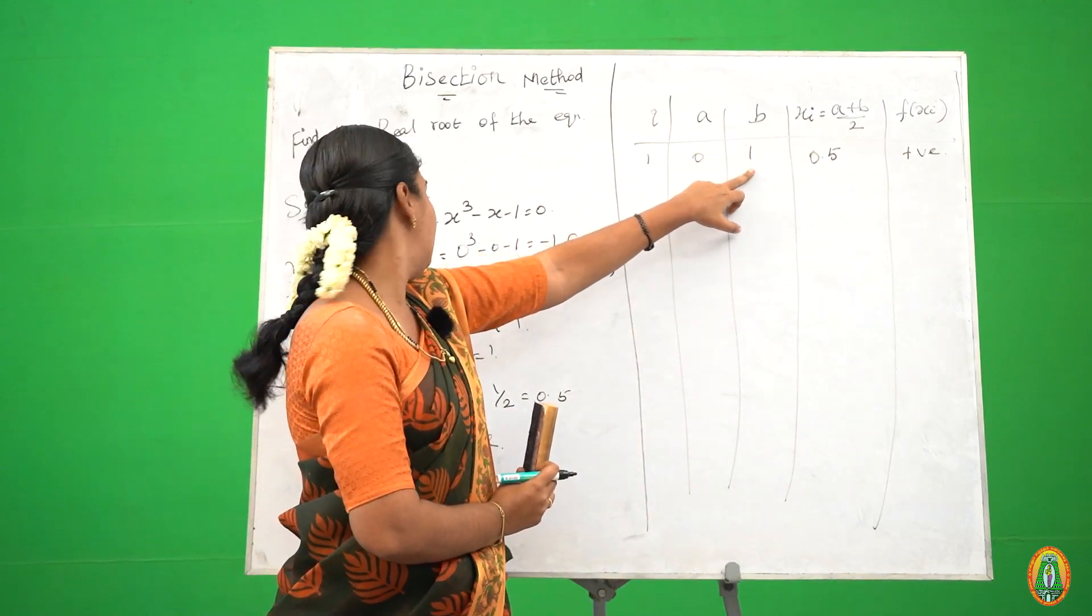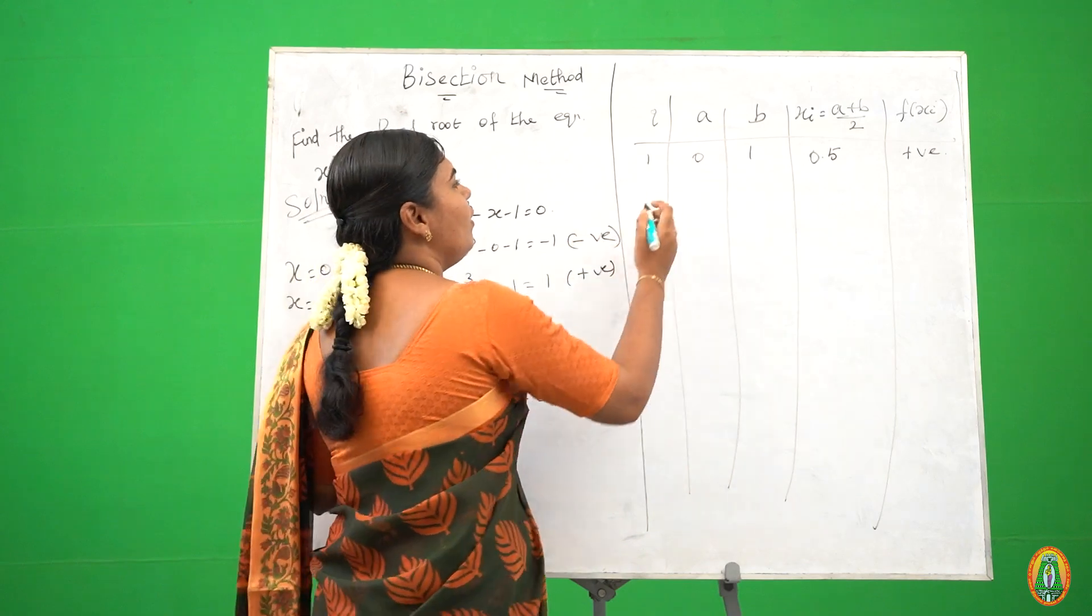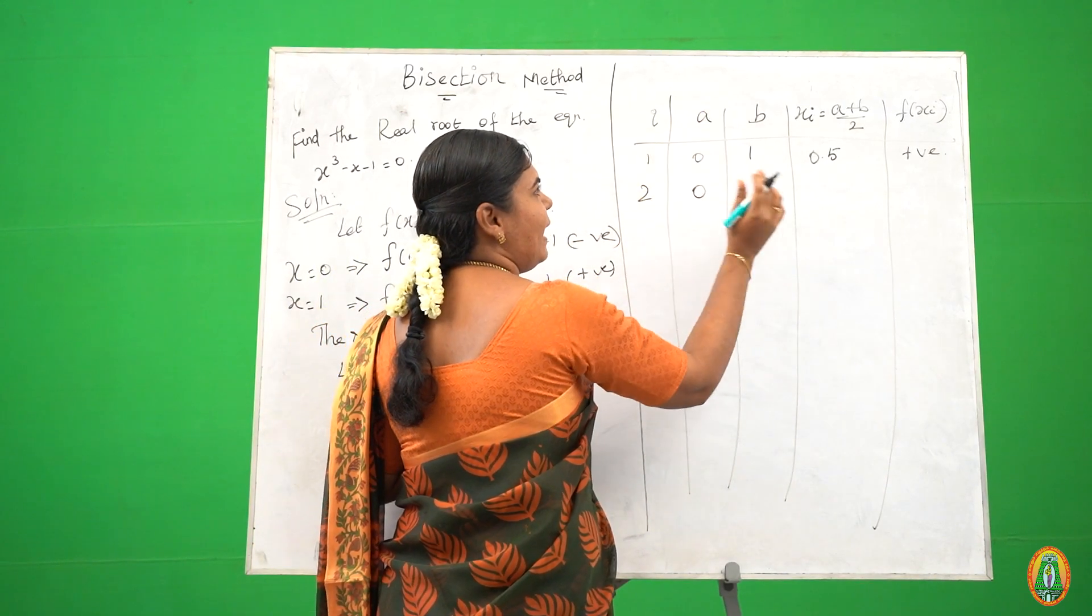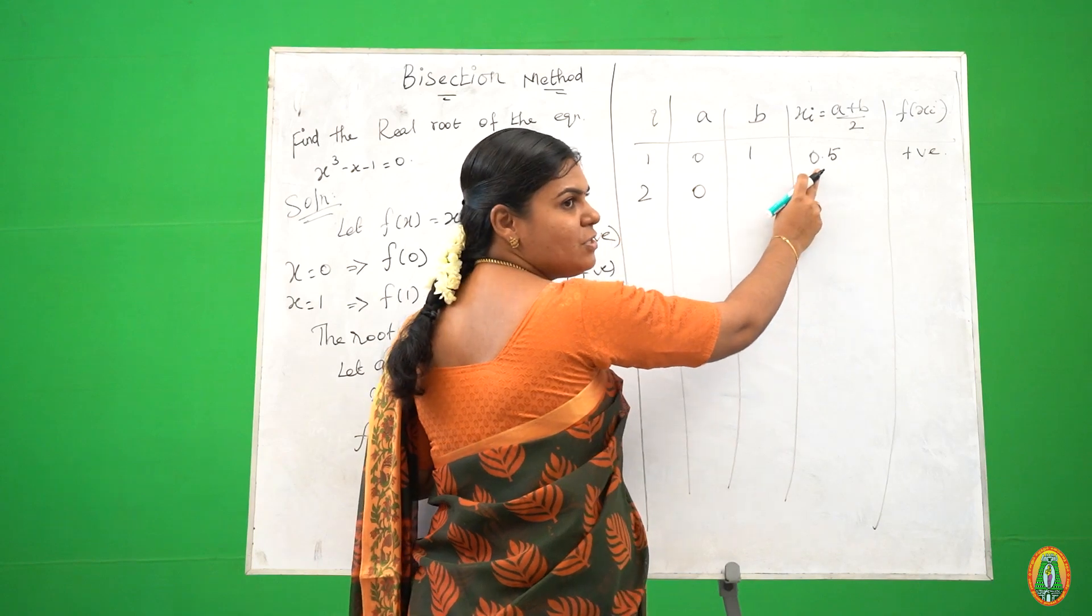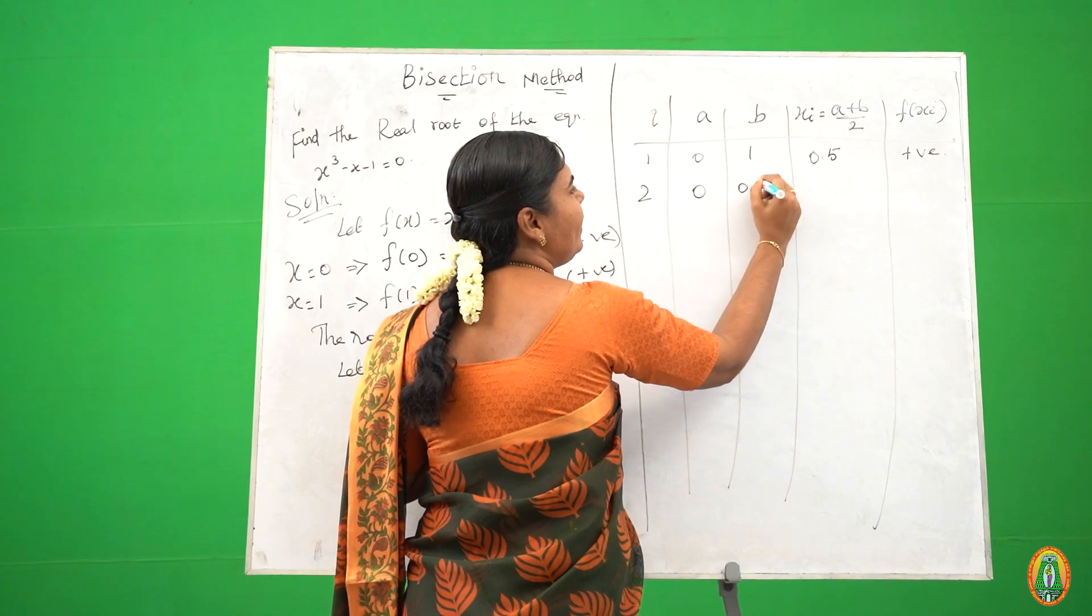We change the root in b. So take a the same and b is changed to xi, 0.5.